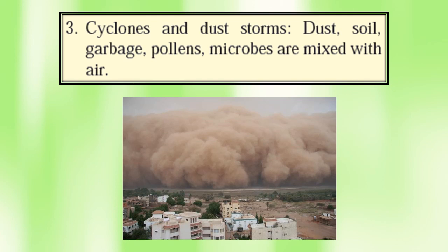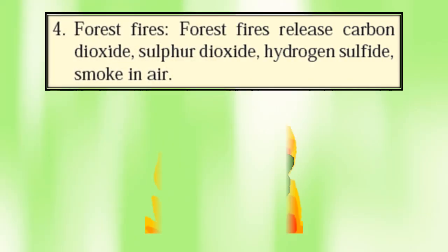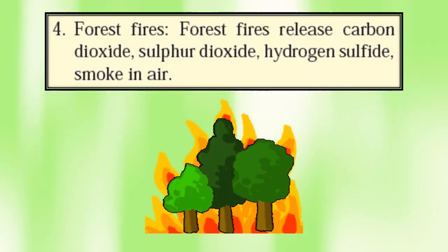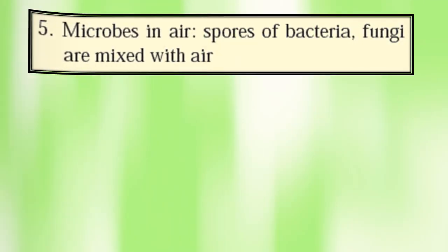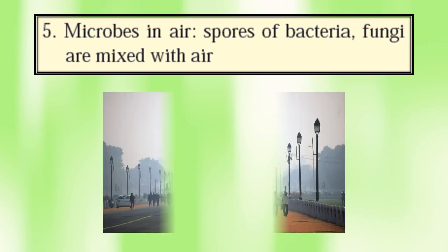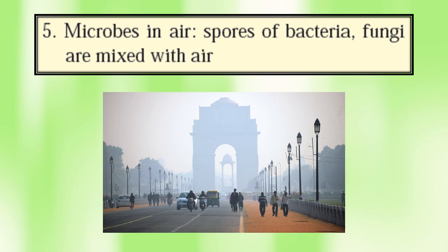Pollens are fine powdery substances that also get mixed with air, resulting in air pollution. Number four, forest fire. Forest fires release carbon dioxide, sulfur dioxide, hydrogen sulfide, and smoke into the air, causing air pollution. Number five, microbes in air. Spores of bacteria and fungi are mixed with air. Spores are agents of reproduction — they multiply and grow in the air, causing air pollution.